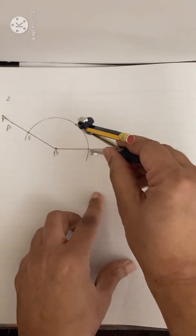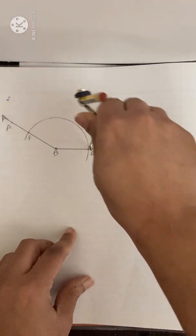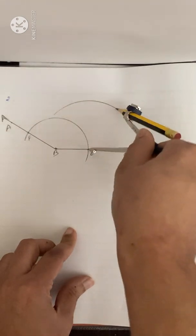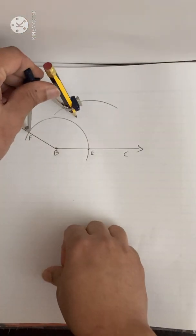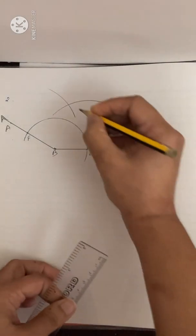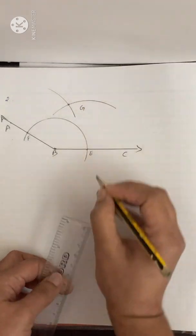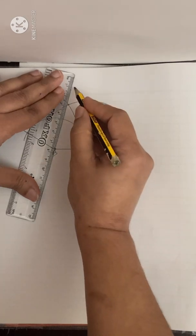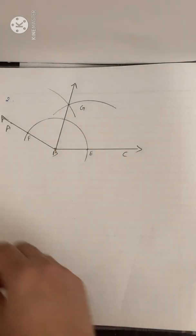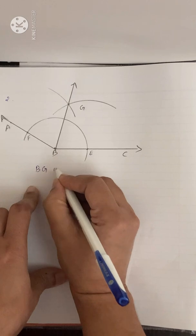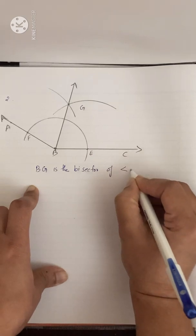Now with E as center, take a radius more than half of arc EF and draw an arc. With F as center, without changing the radius, draw another arc. Mark the intersecting point as G. Join B and G. Therefore, BG is the bisector of angle ABC.